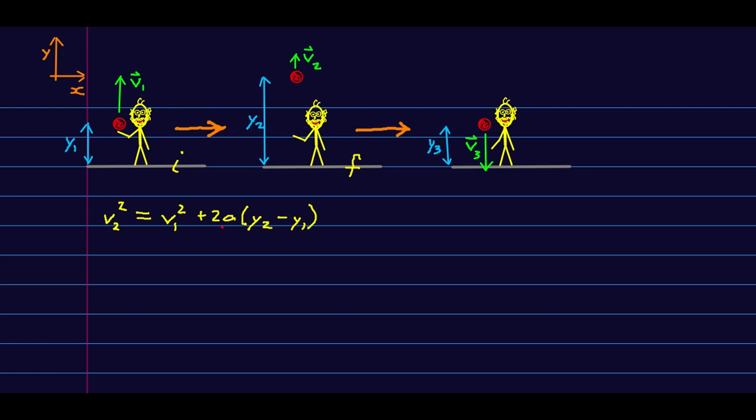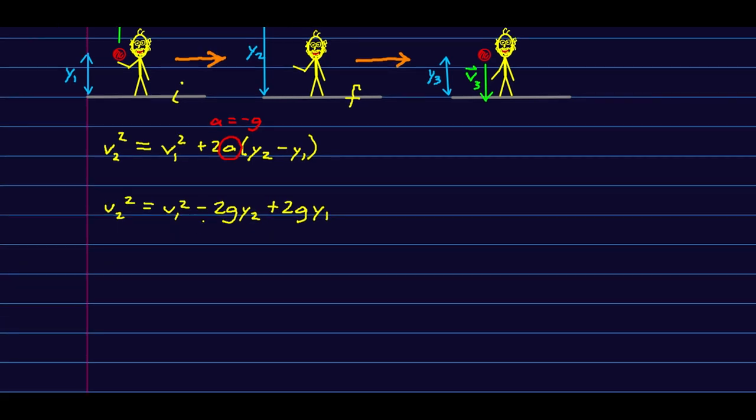And notice that because this is freefall, we know A. I've set up positive, so A is negative G. And so I can rewrite this whole thing as V2 squared equals V1 squared minus 2GY2 plus 2GY1. And now, I'm going to collect all my twos on one side, and all my ones on the other side.